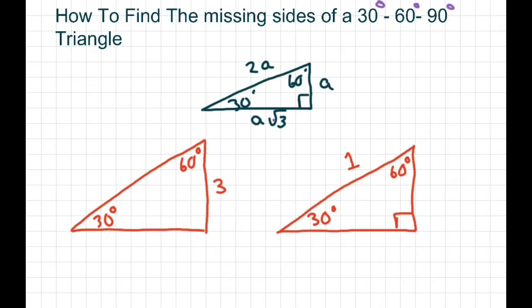In this case, the side across from 30 is 3, so A equals 3. Then you plug this in. For 2A, that's 2 times 3, which is 6. The side across from 60 is 3 square root of 3. You're just plugging in your A.